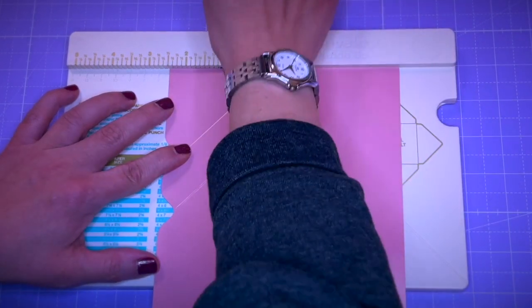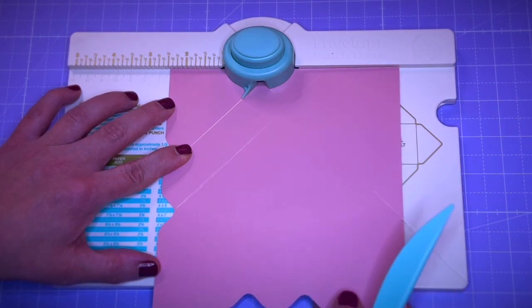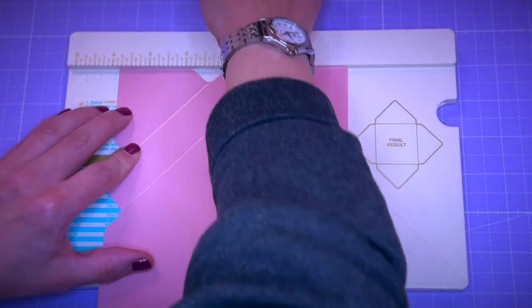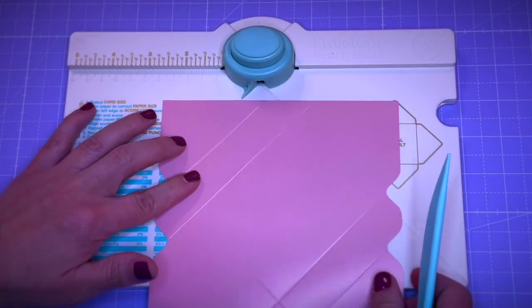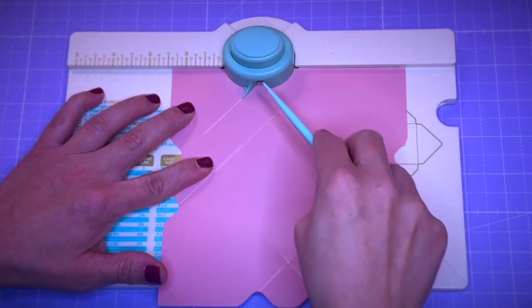Now you turn over the page again and you repeat the process. You align the scored line with the nose, you punch, you score. And you do the same until you have all four sides punched and grooved the same way.